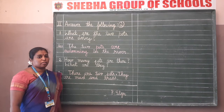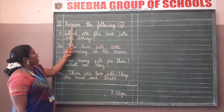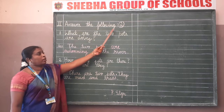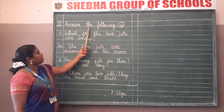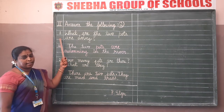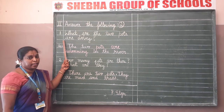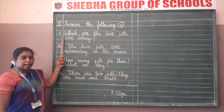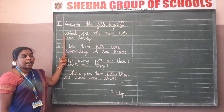Dear students, now we are going to start writing the second Roman numeral. Second Roman numeral: answer the following. There are two 'answer the following' questions. After writing the heading, leave the line and start writing from the next line. Sharpen your pencil and write children - then only the handwriting will be neat. Now write the serial number inside the margin, start writing from the margin with a capital letter.